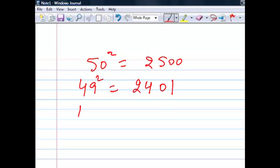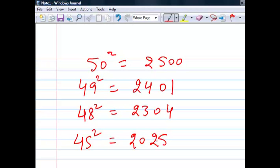Similarly, 48 square will be subtracting 2 from 25, that will be 23, and square of 2 is 04, so 2304. To do the 45 square, I will subtract 5 from 25, that is 20, and take a square of 5, that is 25, so that will be 2025.